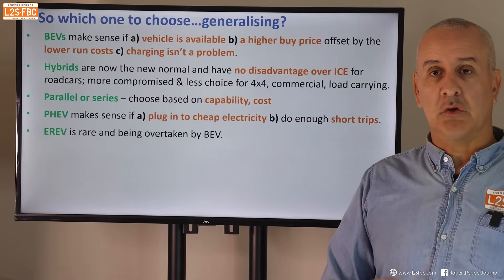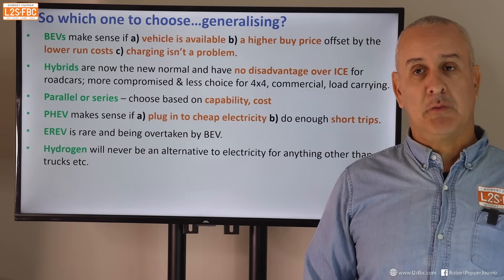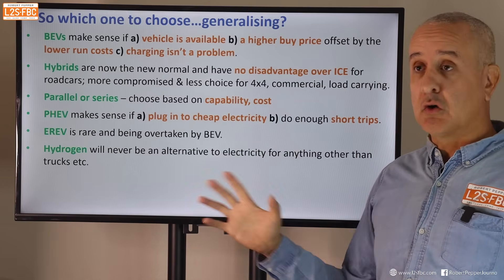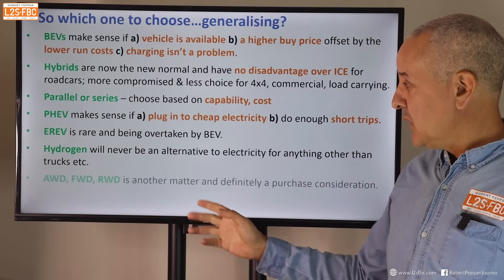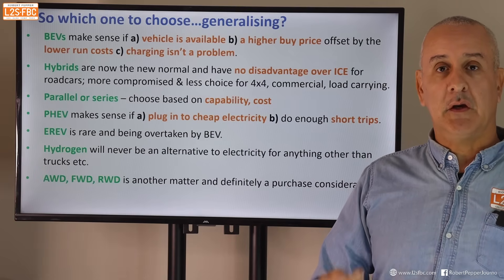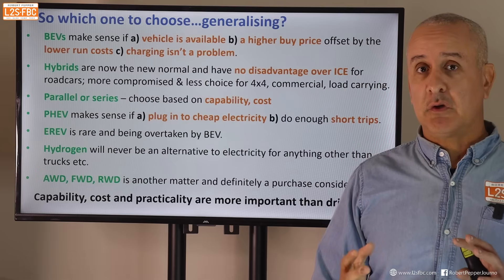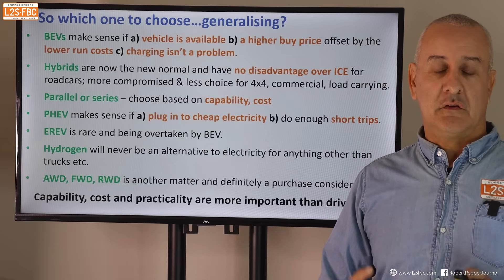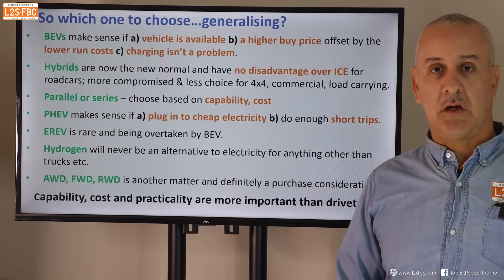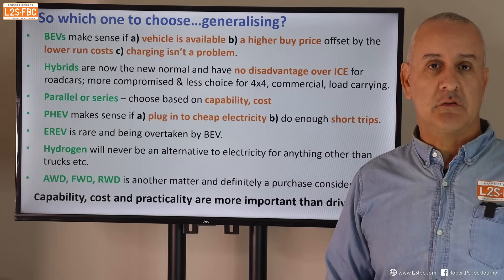EREVs are very rare and being overtaken by EVs as battery technology improves. Hydrogen is unlikely to become a mainstream alternative — we lack the infrastructure and filling stations, and EVs can handle most use cases. The possible exception is heavy-duty commercial vehicles. All-wheel drive versus front-wheel drive is a more important purchase decision than parallel versus series, and will be covered in a separate video. Ultimately, focus on what the vehicle can do — payload, towing, seating, running costs, and how it feels to drive — not on the specific drivetrain architecture.